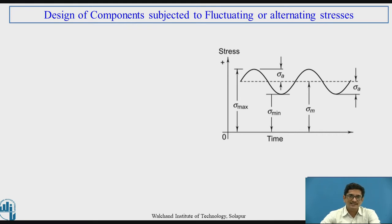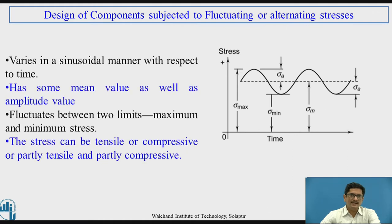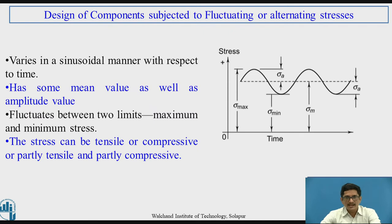For these kinds of designs, sigma A plays a very important role. Let us see why this fluctuation is dangerous. The load and stress vary in a sinusoidal manner with respect to time. It has some mean value as well as an amplitude value, and it fluctuates between two limits — the upper limit is sigma max and the lower limit is sigma min. The stress can be tensile or compressive in nature, and with respect to time it varies as a sinusoidal wave.